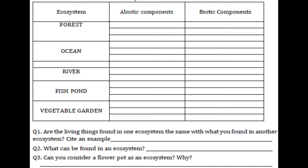Try to enhance your knowledge on the interdependence among biotic and abiotic components within an ecosystem in this first activity. Complete the table below by giving three examples of abiotic and three biotic components for each ecosystem. Answer the questions that follow. Question number one: Are the living things found in one ecosystem the same as what you found in other ecosystems? Cite an example. Question number two: What can be found in an ecosystem? Question number three: Can you consider a flower patch an ecosystem? Why?